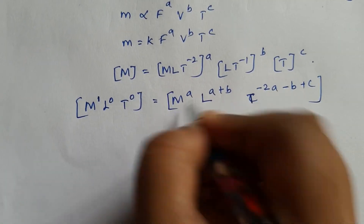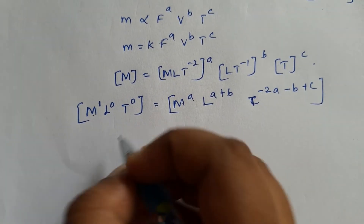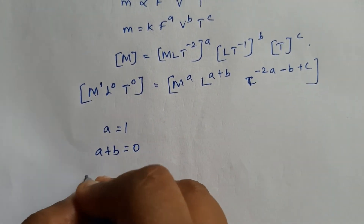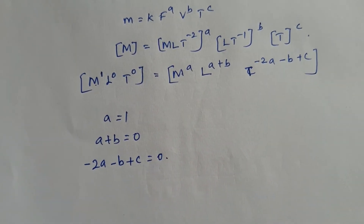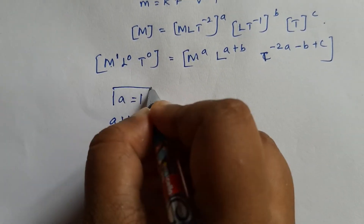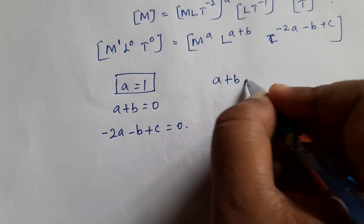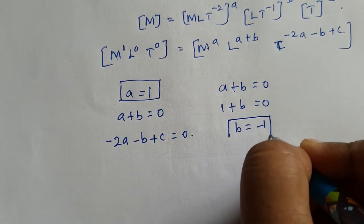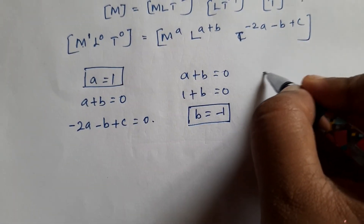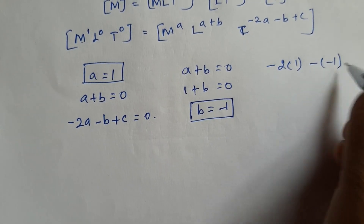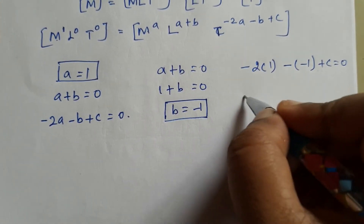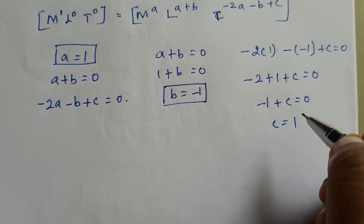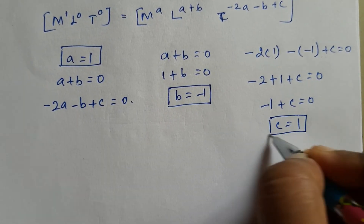Now equating powers: for M, a = 1. For L, a + b = 0. Another equation: −2a − b + c = 0. We got a = 1; substituting, 1 + b = 0, so b = −1. Now substituting: −2(1) − (−1) + c = 0, giving −2 + 1 + c = 0, so c = 1. We got a, b, c values.